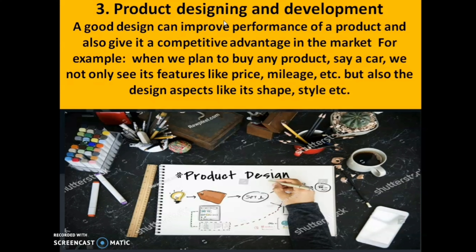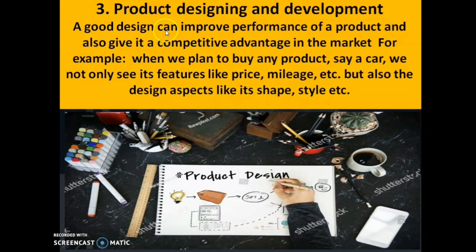The third function is product designing and development. After collecting information and doing the planning, they have to design and develop the product. A good design can improve the performance of a product and also give it a competitive advantage in the market. For example, when we plan to buy a car, we not only look at features like price and mileage, but also the design aspects like its shape and style. Every organization gives importance to product designing and development.